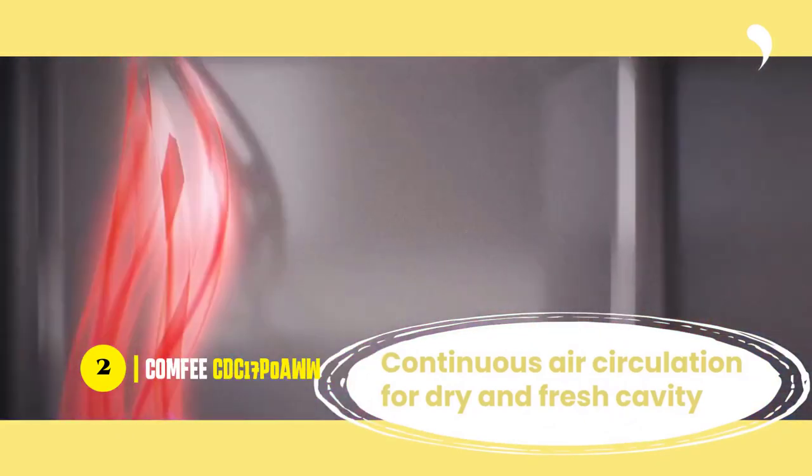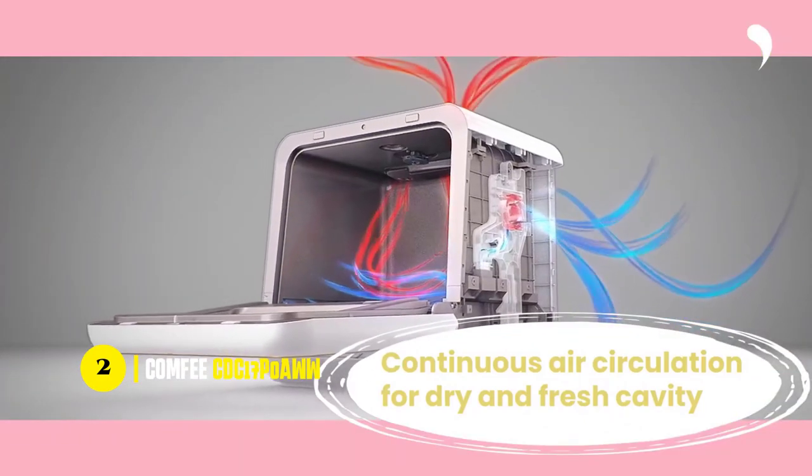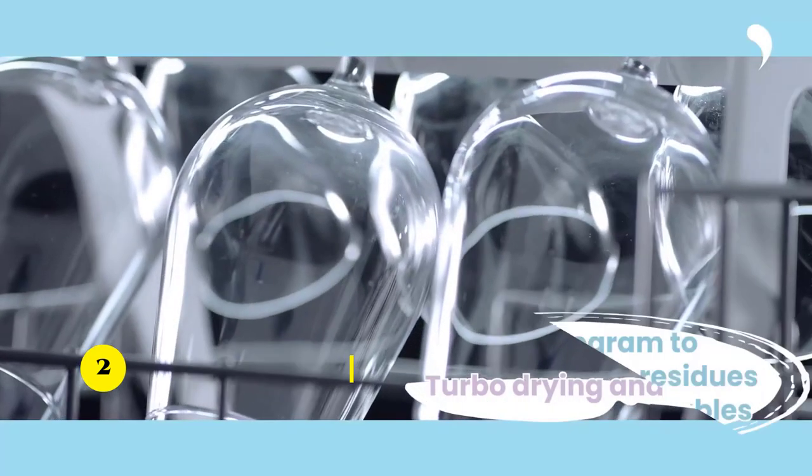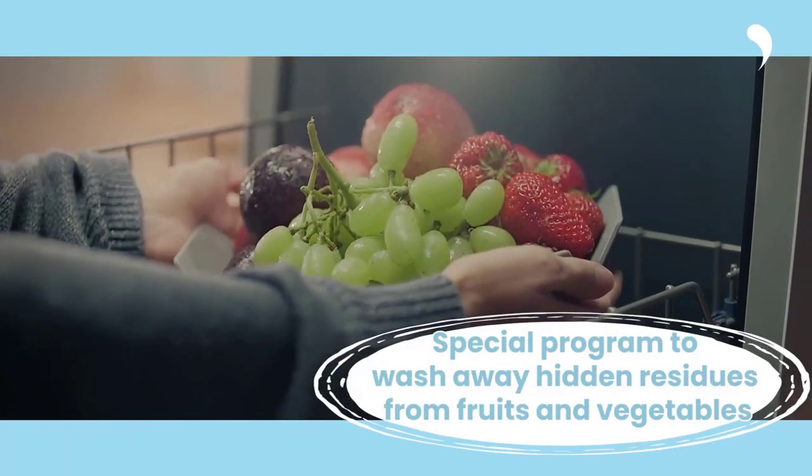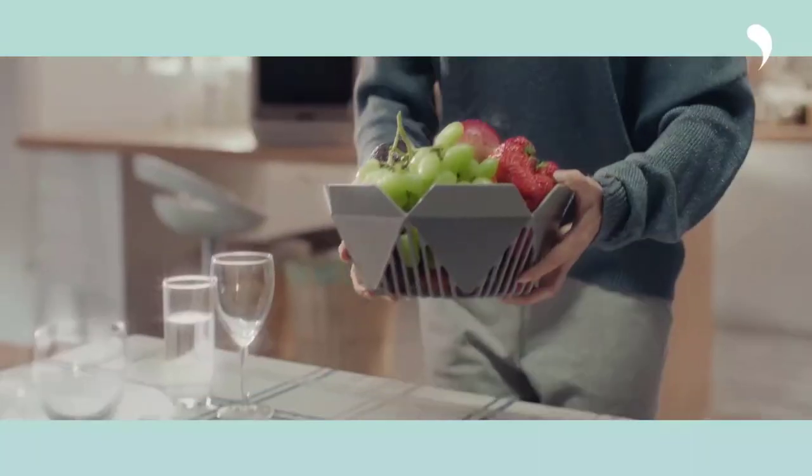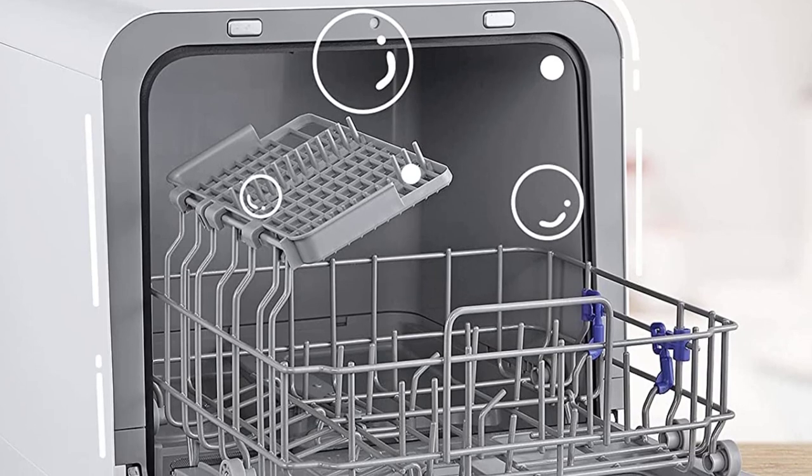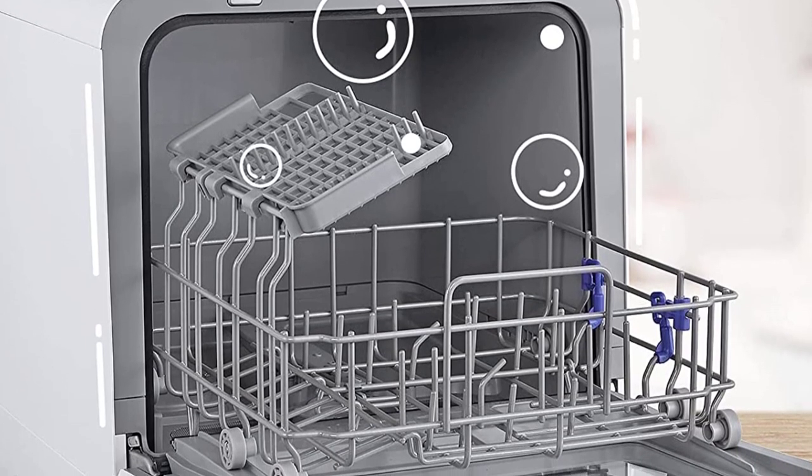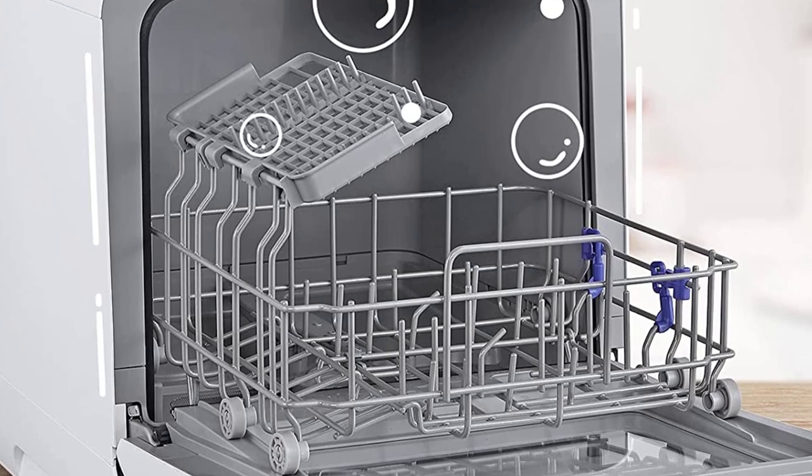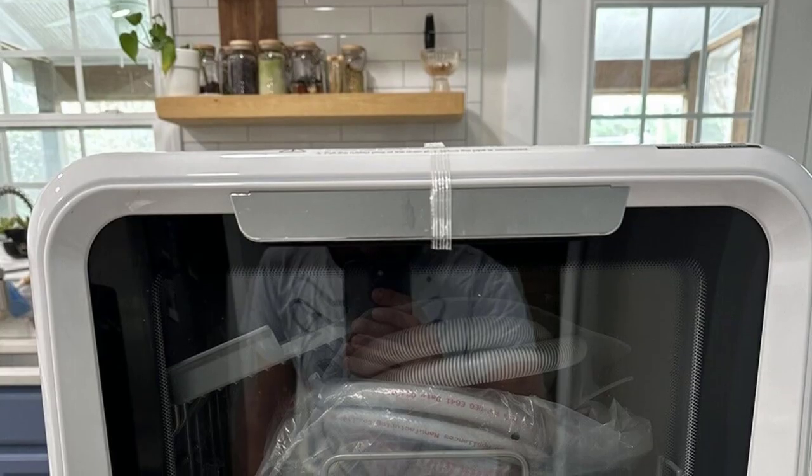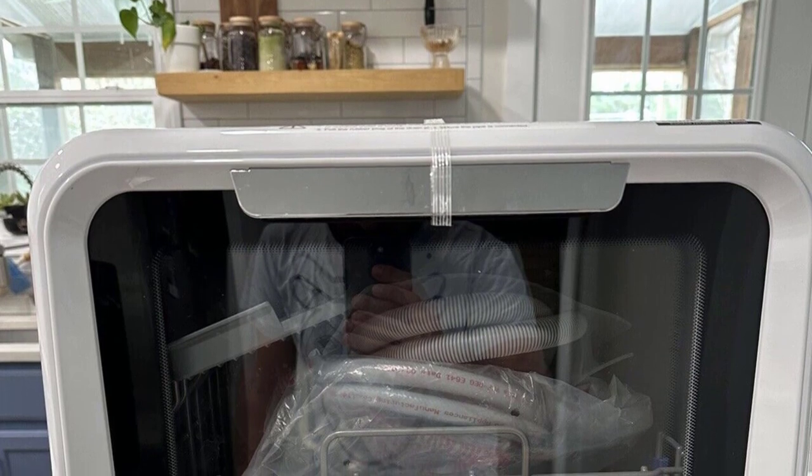One of the best features of this dishwasher is its six washing programs, including Normal, Rapid, Steam, Fruit, Glass, and Air Refresh. The Steam program, in particular, is very effective at removing dried and stuck-on food particles, making it perfect for baby bottles and heavily soiled dishes. And with the Air Refresh Extra Drying Mode, you can be sure that your dishes will stay fresh and odor-free.